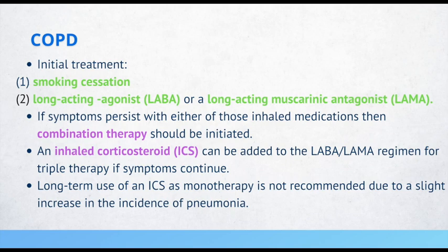The initial treatment for COPD follows a step-up approach similar to asthma: first smoking cessation, then a LABA or LAMA. If that does not work, use LABA and LAMA together. If those two together do not work, add an inhaled corticosteroid for triple therapy — but never use an inhaled corticosteroid by itself.